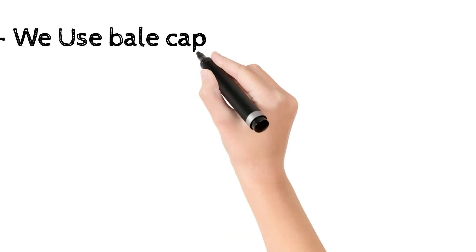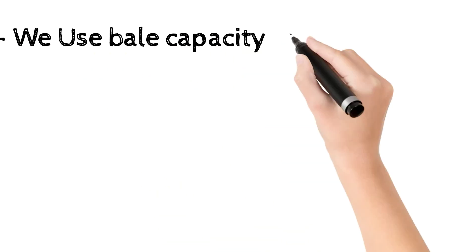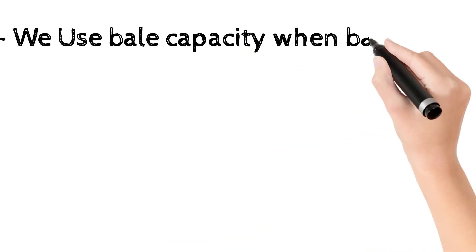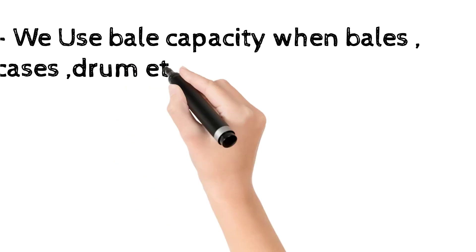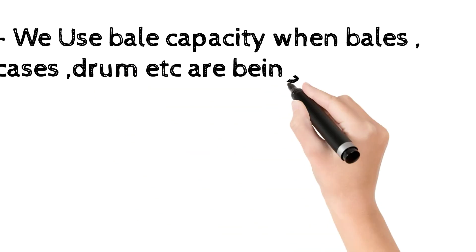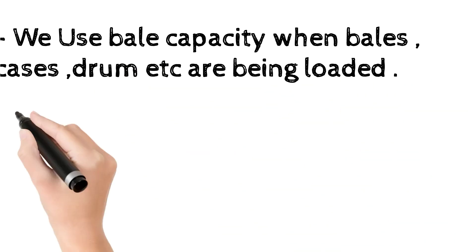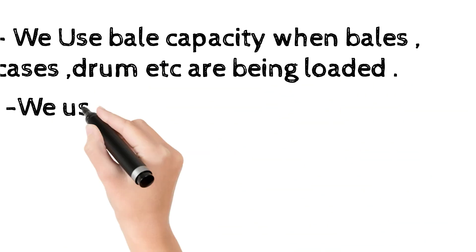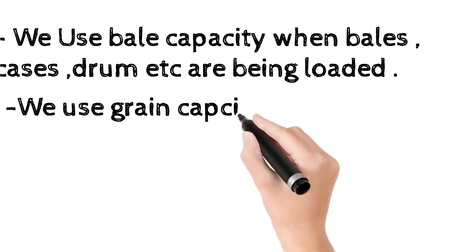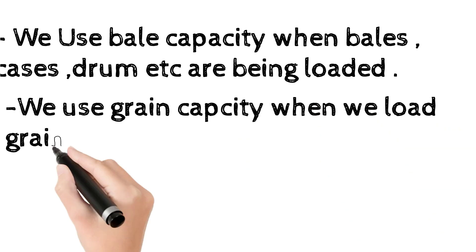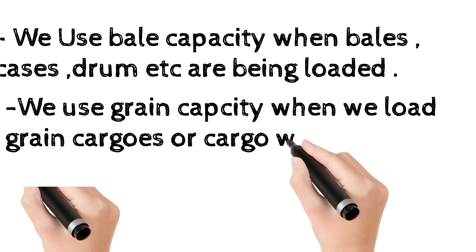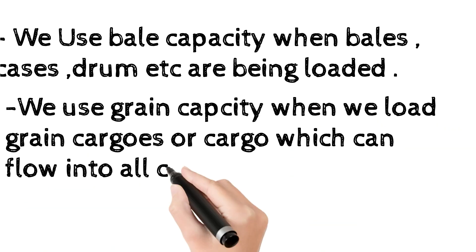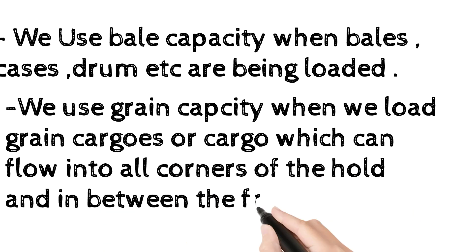We use bale capacity when bales, cases, drums, etc. are being loaded. Grain capacity is used when loading grain cargoes or cargo which can flow into all the corners of the hold and in between the frames.